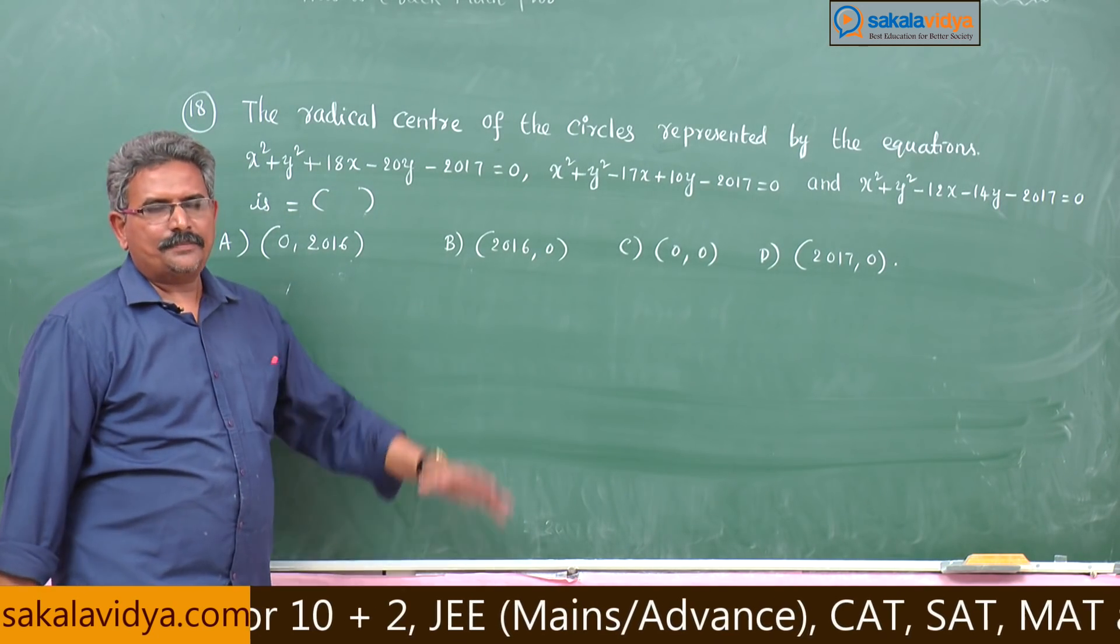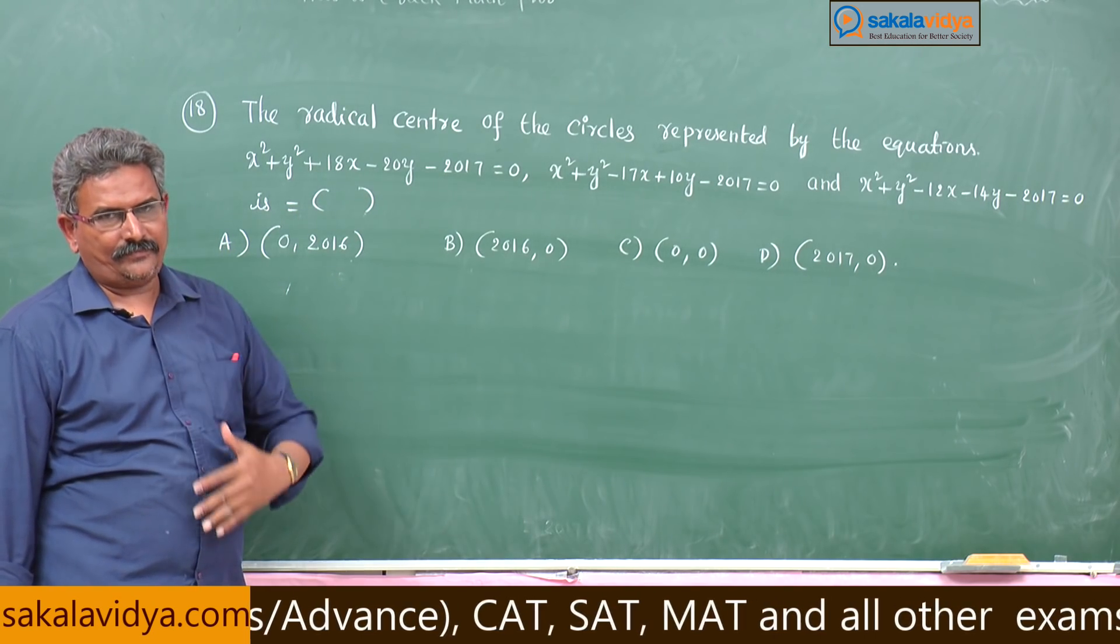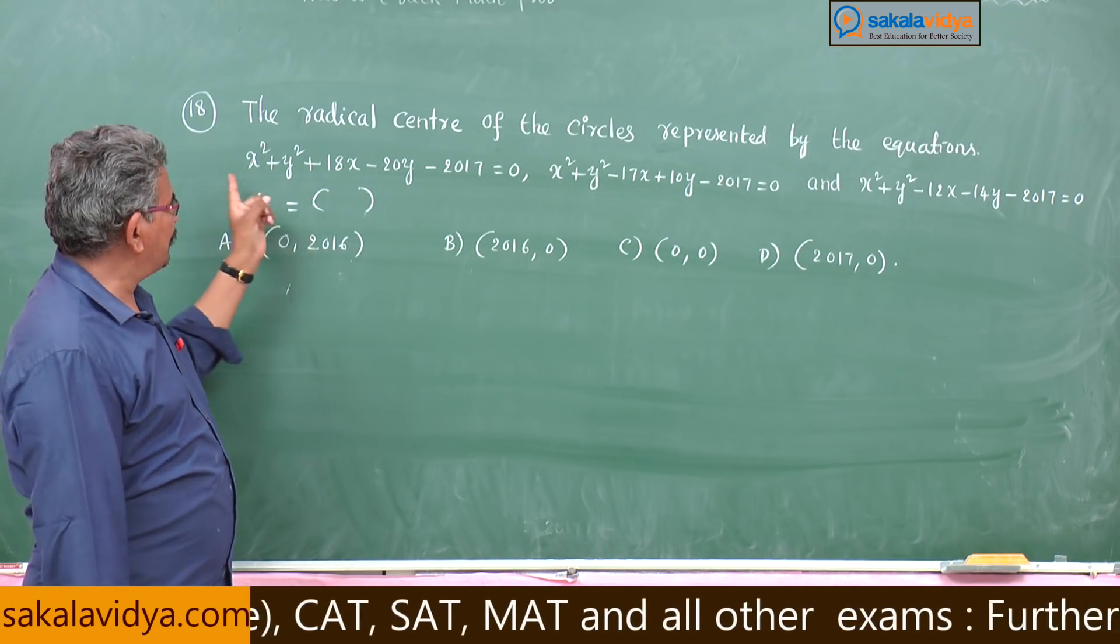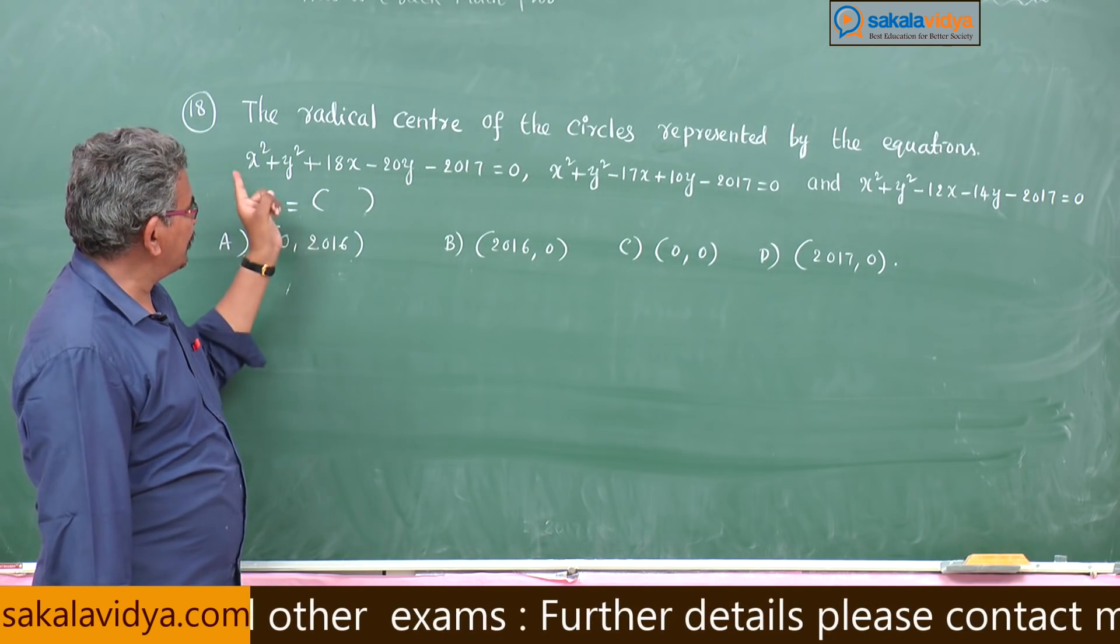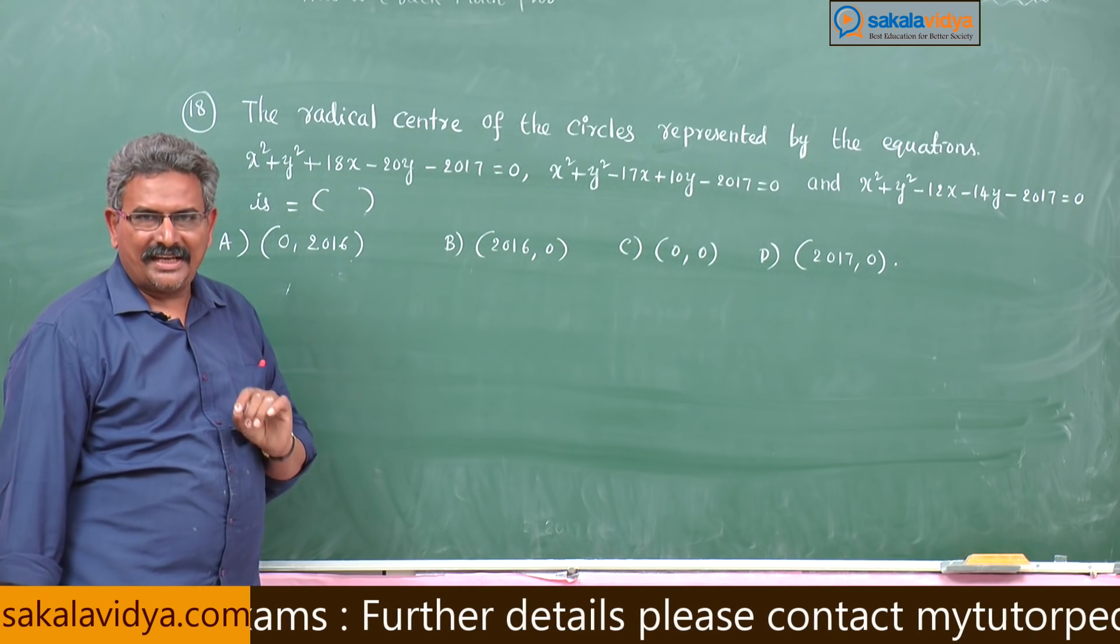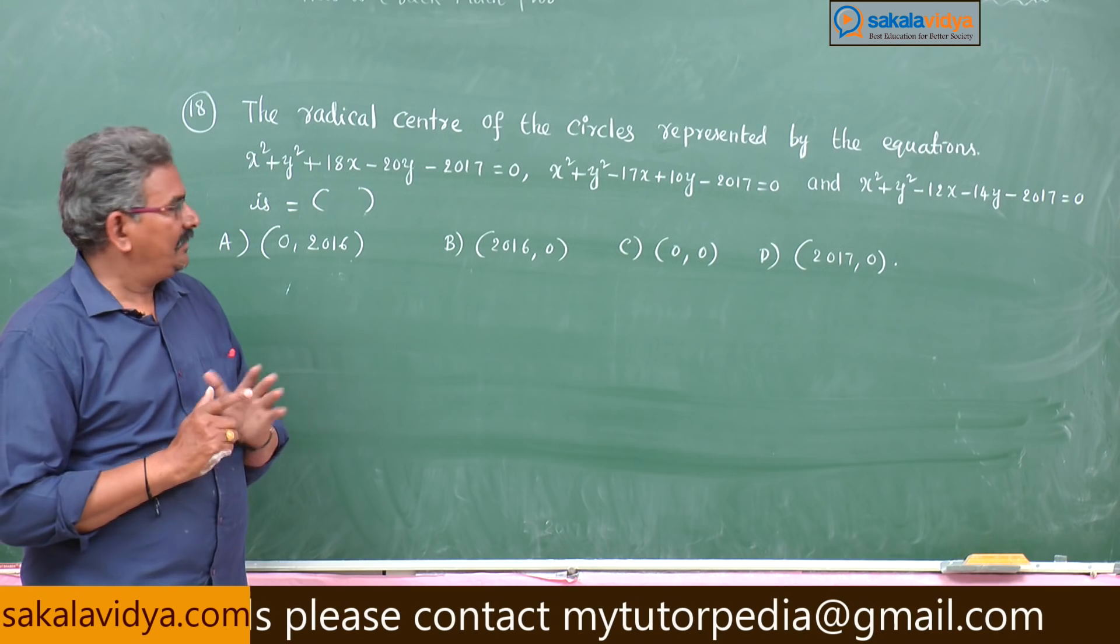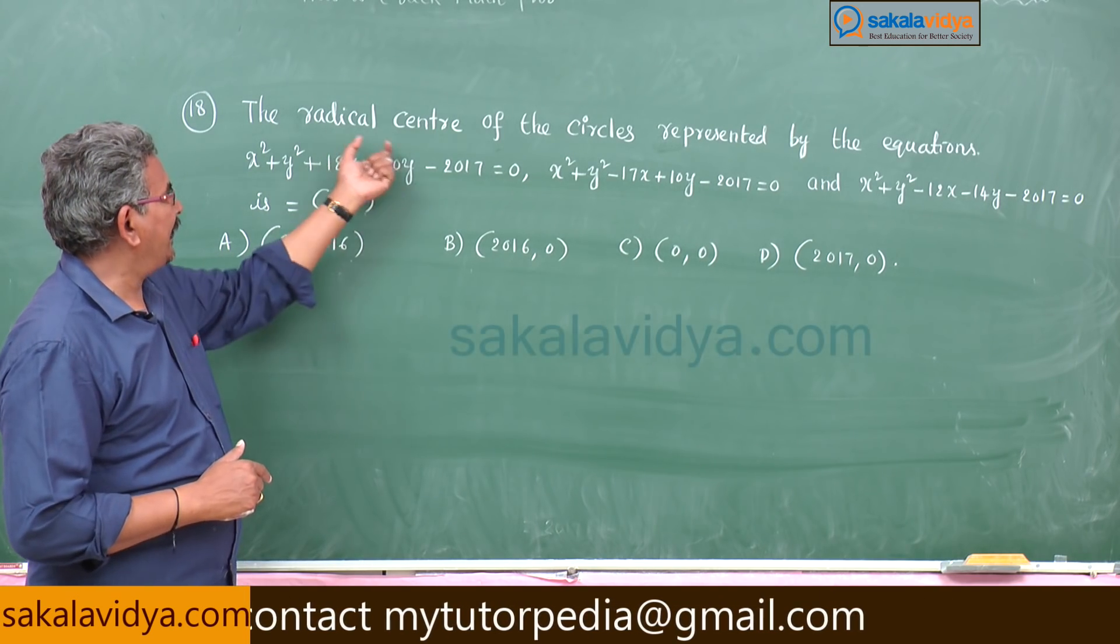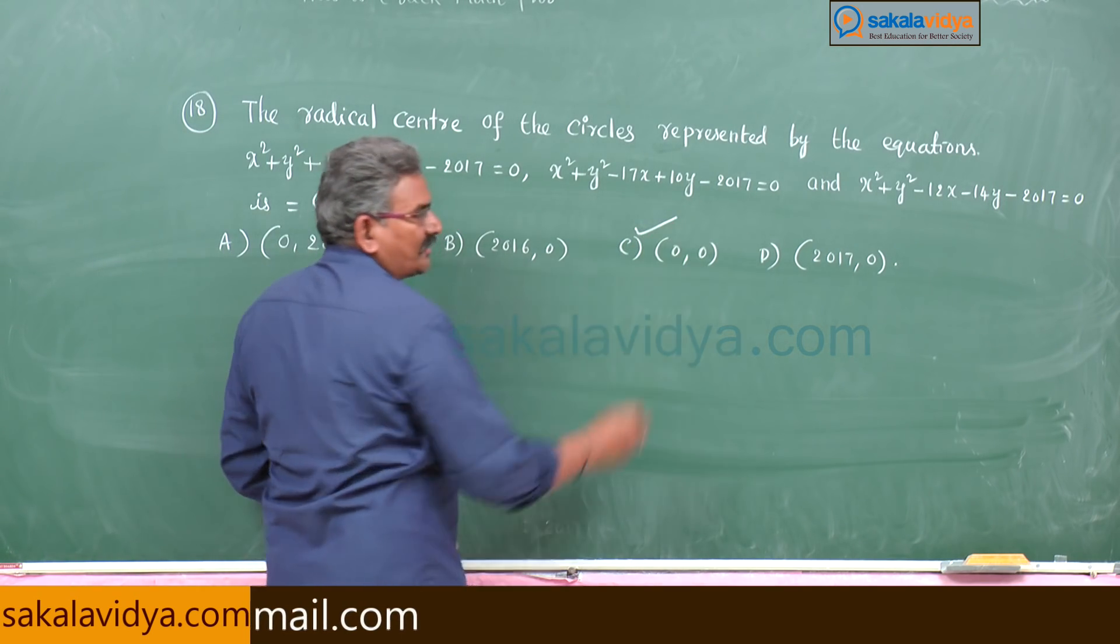So this problem seems to be very difficult, but very very easy. Just observe the constants of the three circles. Since constants of the three circles are same that is equal to minus 2017 obviously, the Radical Centre will be origin only. So that means, 0 comma 0 this is the answer.